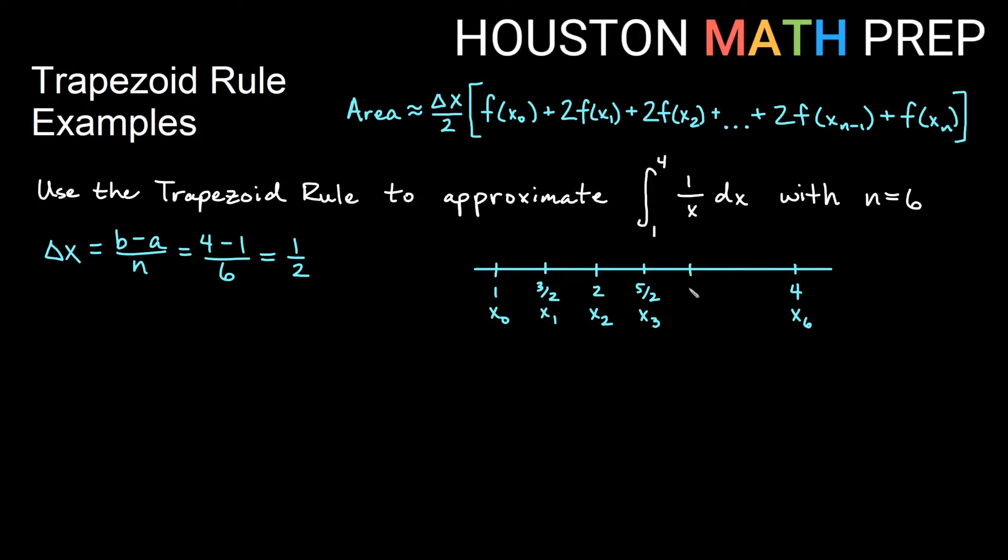If I go up another half, that will be 3. That'll be my x₄. And then if I go up another half, that will be 3 and a half or 7 halves, and that will be my x₅.